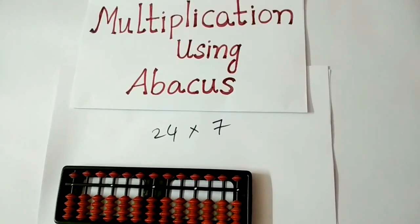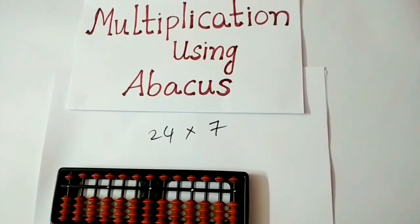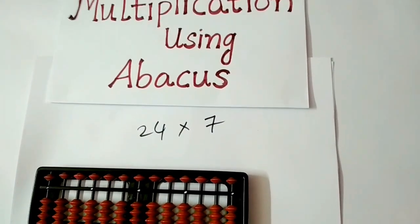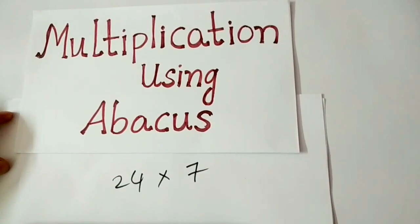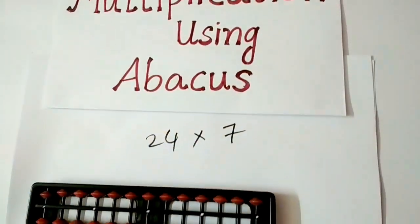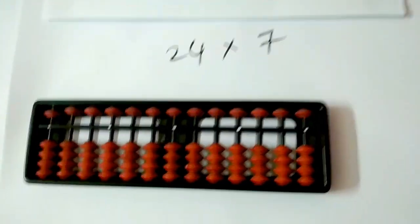For example, if we multiply 25 with 4, we get an answer as 100 where 25 is a 2 digit number and 4 is a single digit number and the answer 100 is a 3 digit number. Let us go ahead by multiplying 24 with 7.